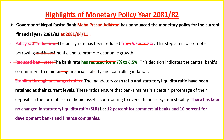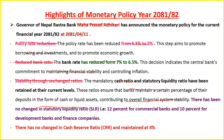The mandatory cash reserve ratio (CRR) and statutory liquidity ratio (SLR) have been retained at their current levels. These ratios ensure that banks maintain a certain percentage of their deposits in the form of cash or liquid assets, contributing to overall financial system stability. The SLR remains at 12 percent for commercial banks and 10 percent for development banks and finance companies — unchanged from fiscal year 2080/81. The goal of monetary policy is also to maintain foreign exchange reserves to cover at least seven months of goods and services imports.